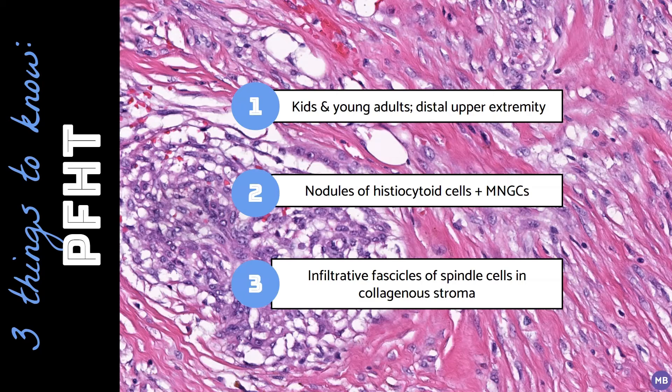Clinical features such as patient age, location, and rate of growth can be helpful in the diagnosis, but additional tissue sampling may still be necessary. This usually isn't a problem, since complete excision is recommended given its potential for metastasis, although this is rare. Local recurrence is more common and may occur in up to 40% of cases.